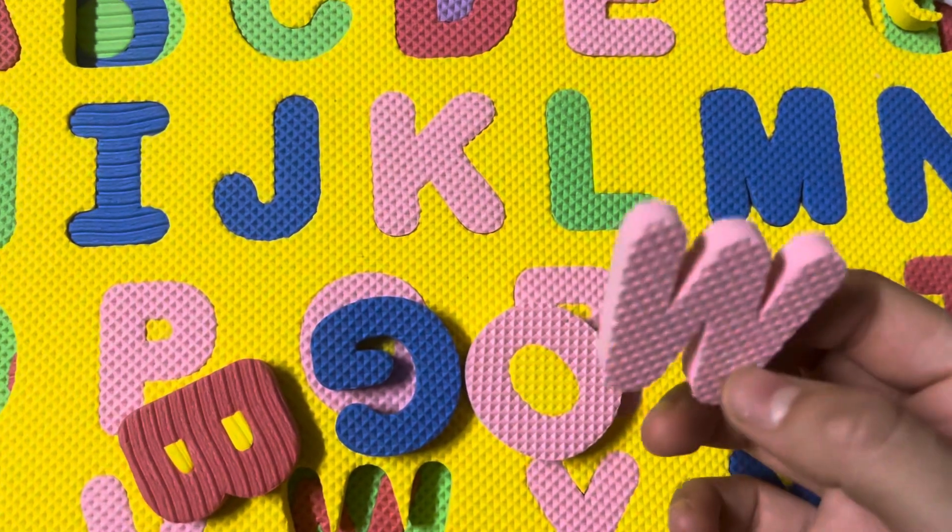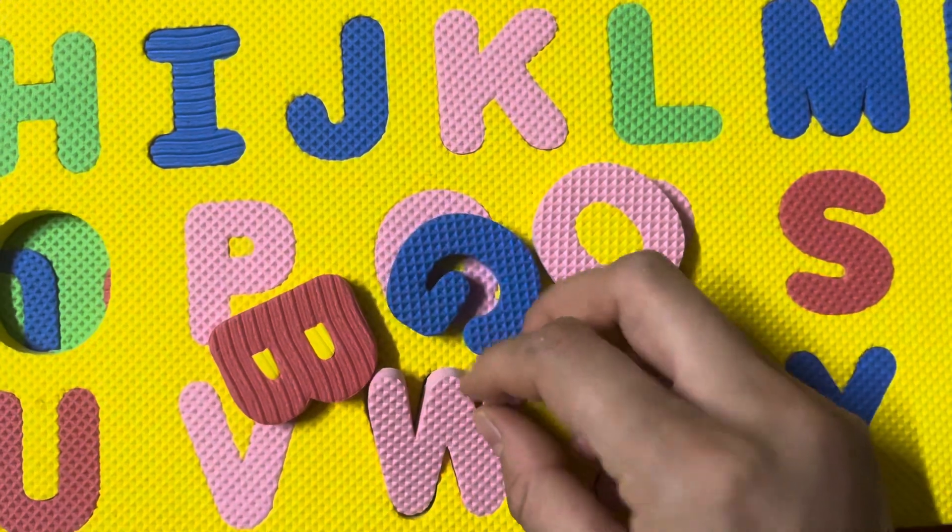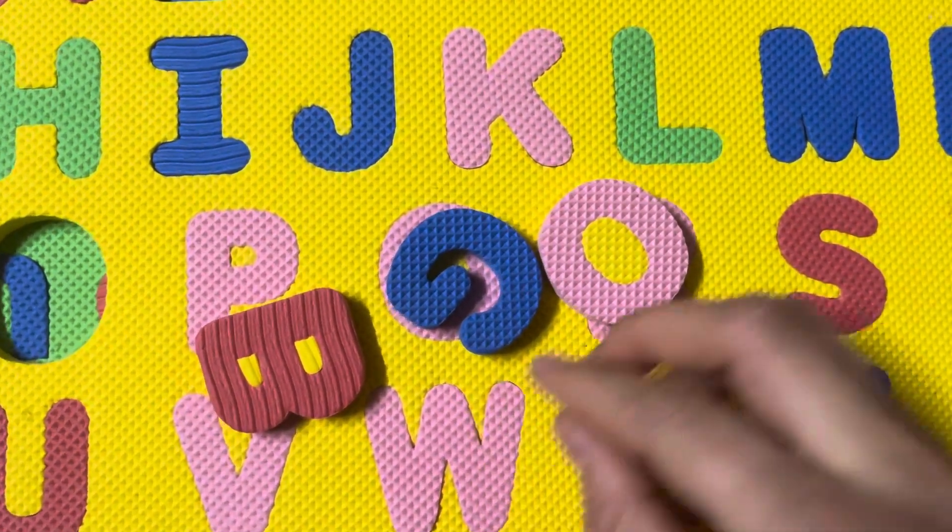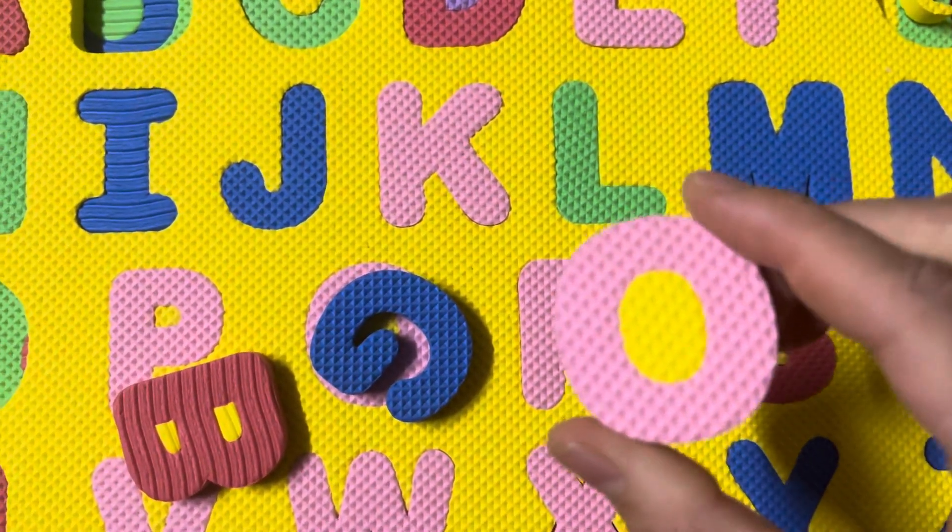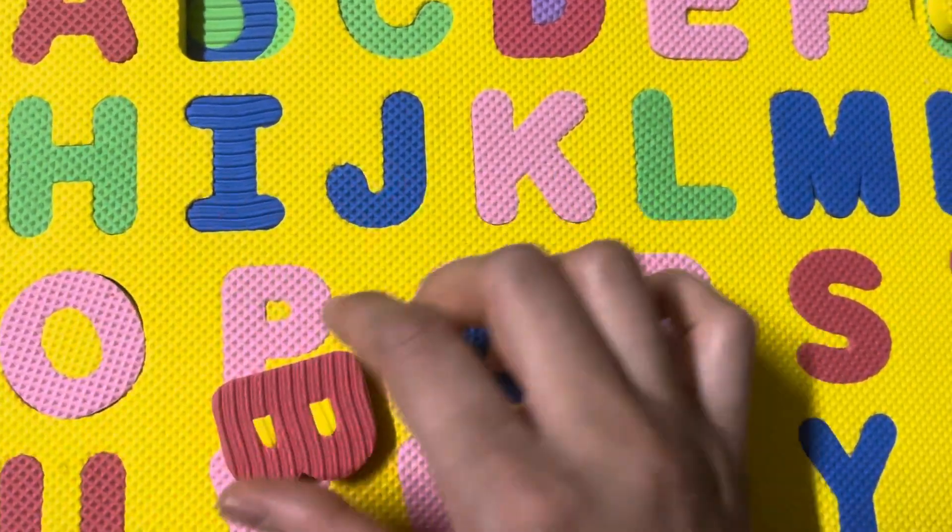The next letter is letter W, W for watch, W for wall. The next letter is letter O, O for orange, O for oxygen.